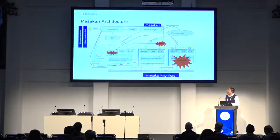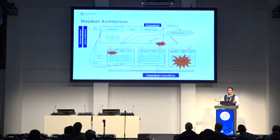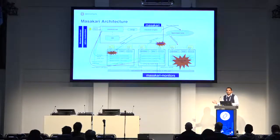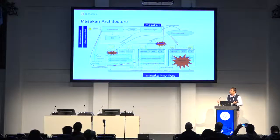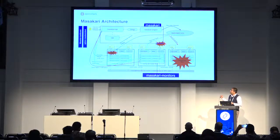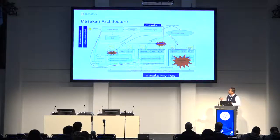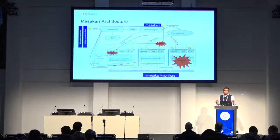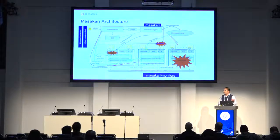Currently, we have four types of monitors. The first one is the host monitor, which monitors the physical host servers. If it detects a failure, it sends a notification to Masakari, and the Masakari engine takes care of the recovery part. The second type of monitor is the process monitor, which monitors the important processes for VMs running, such as the libvirt daemon or any other process.